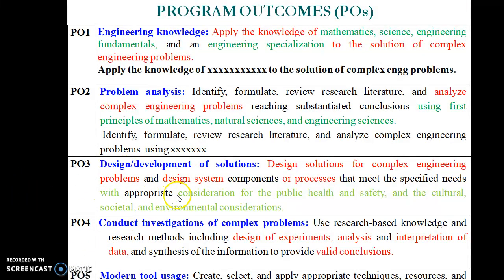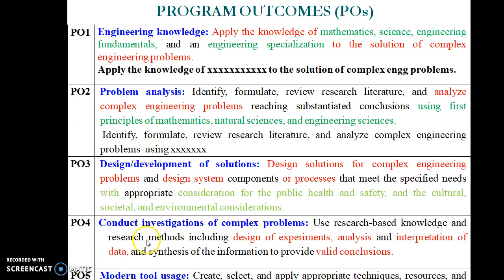PO3 design must consider public health, safety, cultural issues, and environmental conditions. So the progression is: apply, analyze, and then design and develop a system. After design, PO4 involves conducting experiments, interpreting data, and drawing valid conclusions — an evaluation level. PO5 involves using modern engineering tools. Most core engineering courses are mapped to PO1 through PO5.